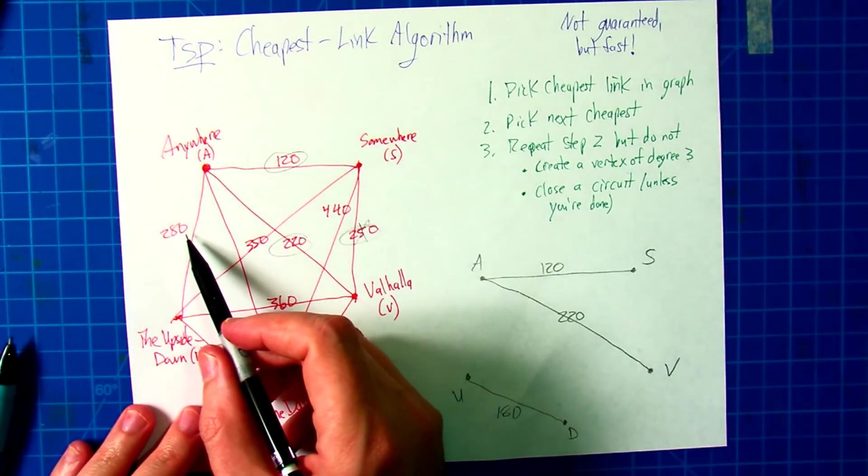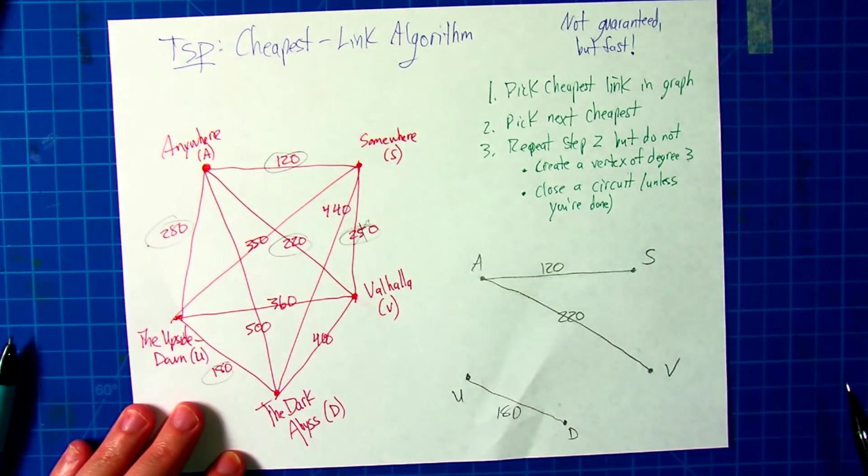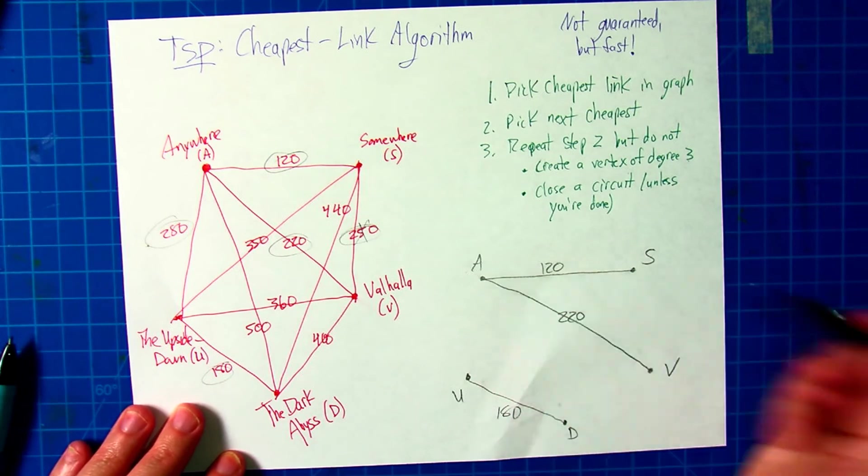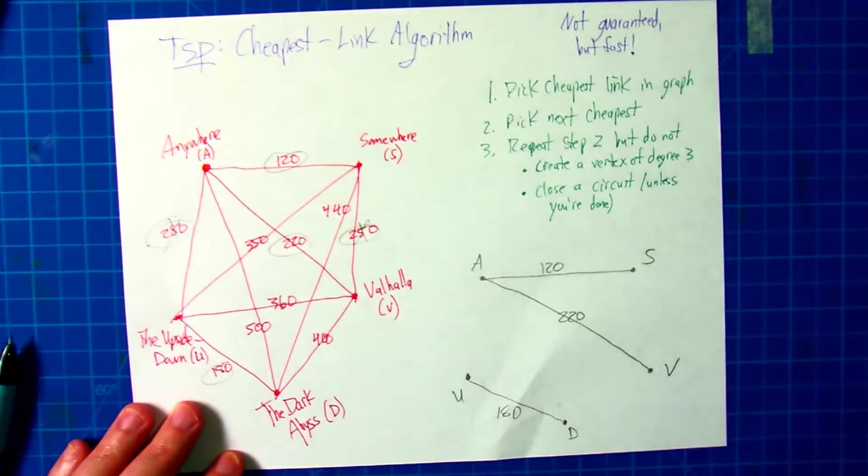Next cheapest is the 280 over here, but the 280 doesn't work either because we'd end up creating a vertex of degree three at A if we put that in, so the 280 is out as well.